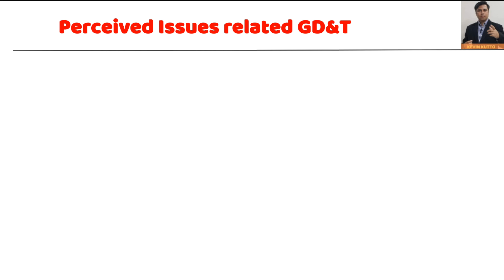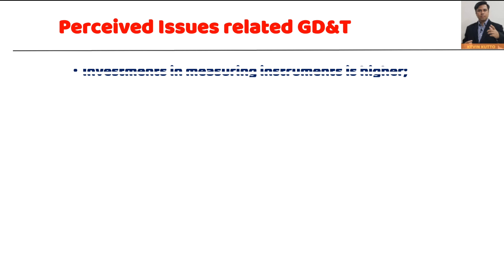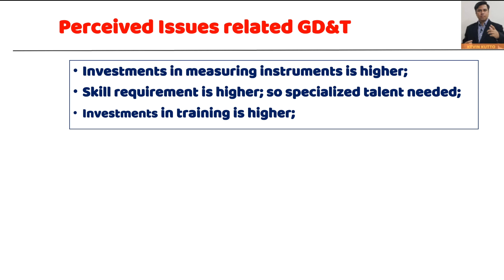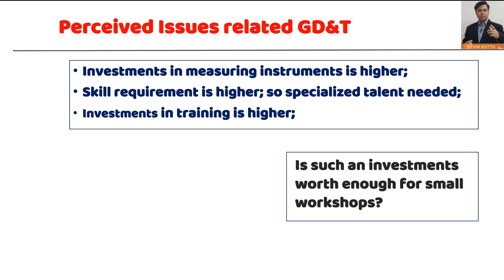Despite GD&T's advantages, there are questions that need to be answered especially for small companies. First, the investment in measuring instruments is very high. It is also a different language, so you need specialized talent — meaning higher personnel costs. And if you're adopting this standard, you have to train your employees, so training costs will also be higher. The question is: is such an investment worth it for small workshops or small companies?